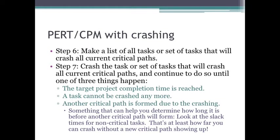Once you have that, step seven: crash the task or set of tasks that will crash all current critical paths, and continue to do so until one of three things happens. First, the target project completion time is reached. Second, the task can't be crashed anymore — we can only crash tasks so much. And third, another critical path is formed due to crashing. As the first example demonstrated, this is more common than you think. The slack times for the non-critical paths can help you determine how long before another critical path will form, since that's at least how far you can crash without a new critical path appearing.